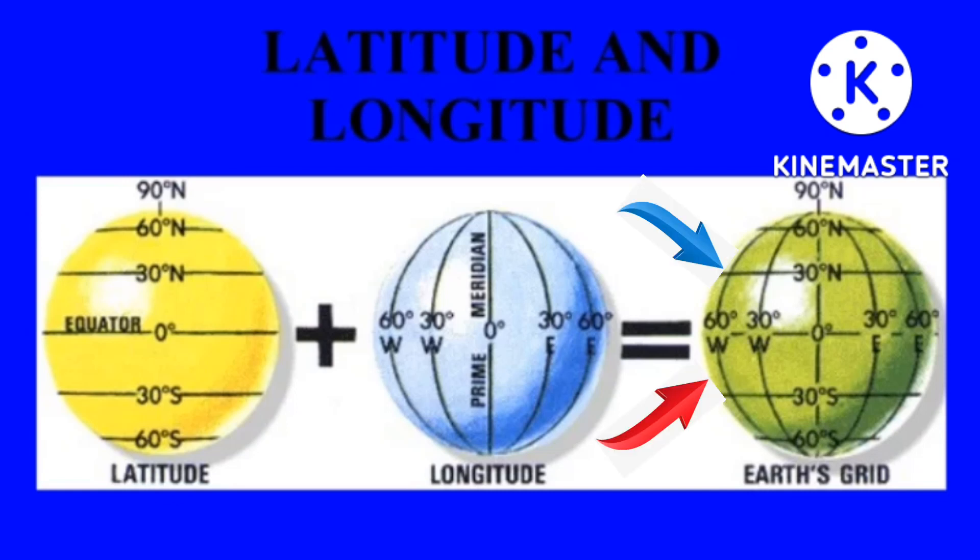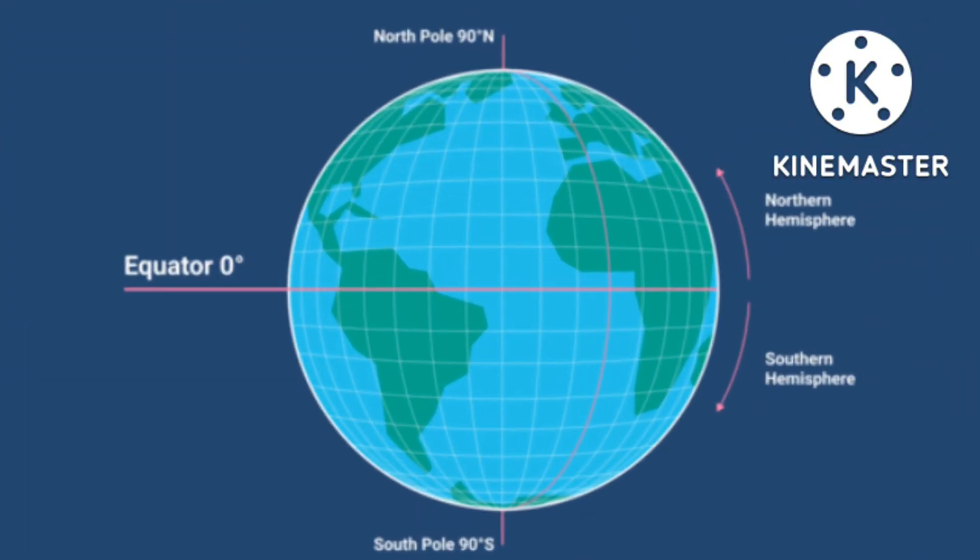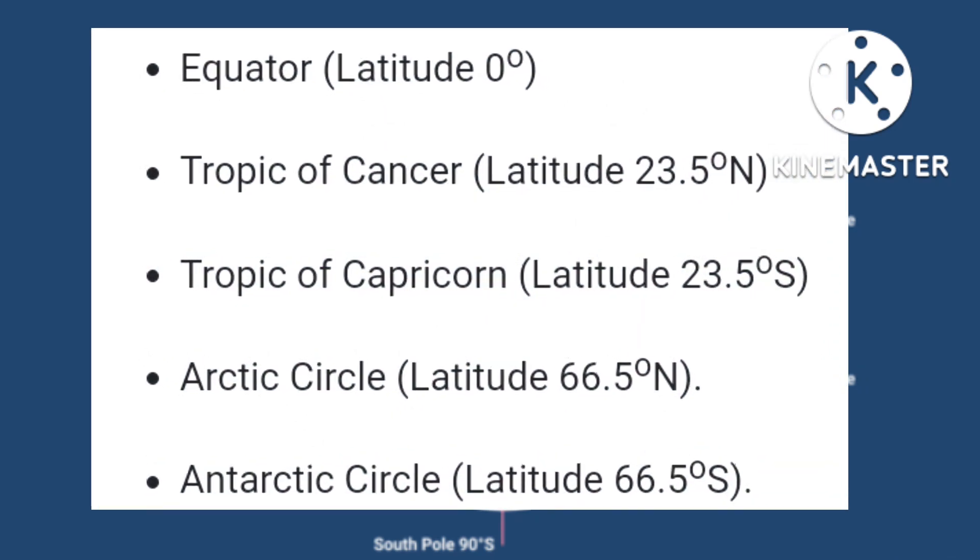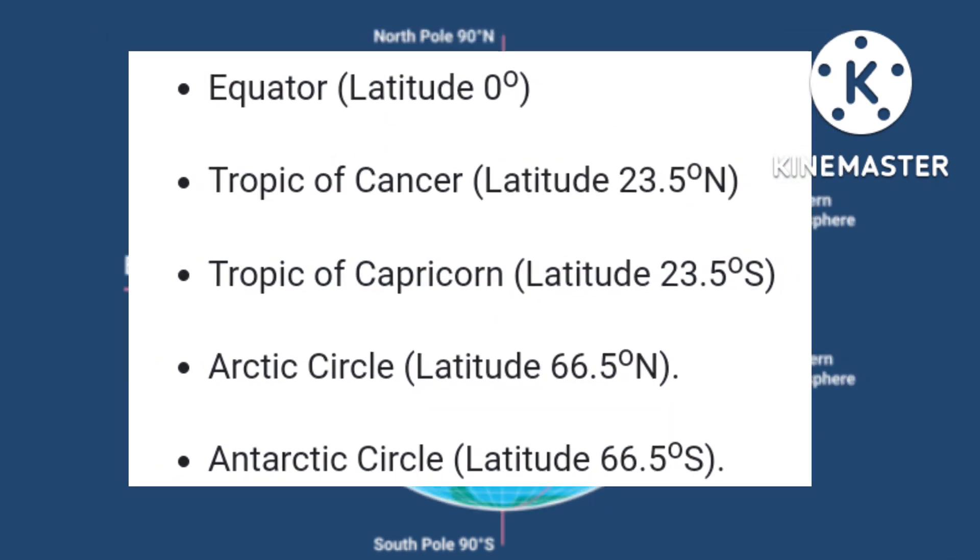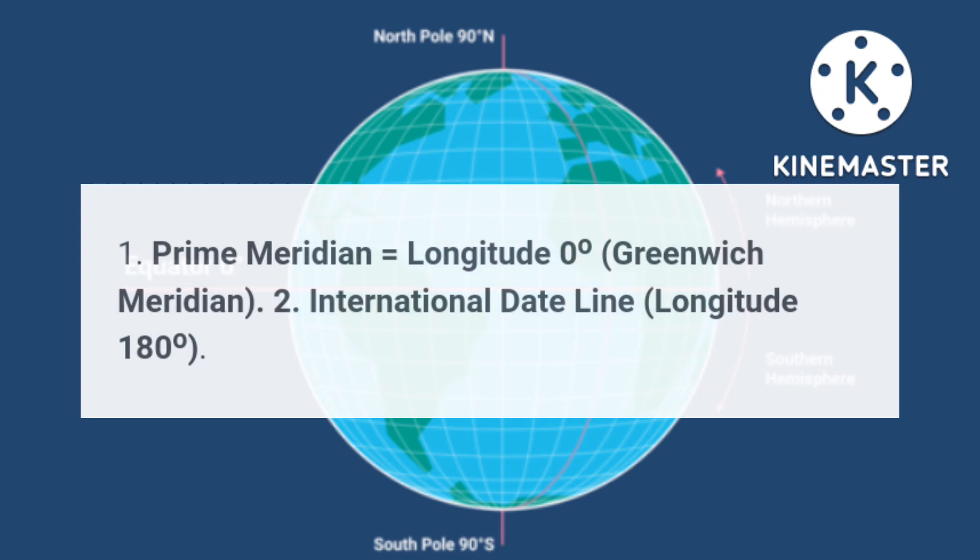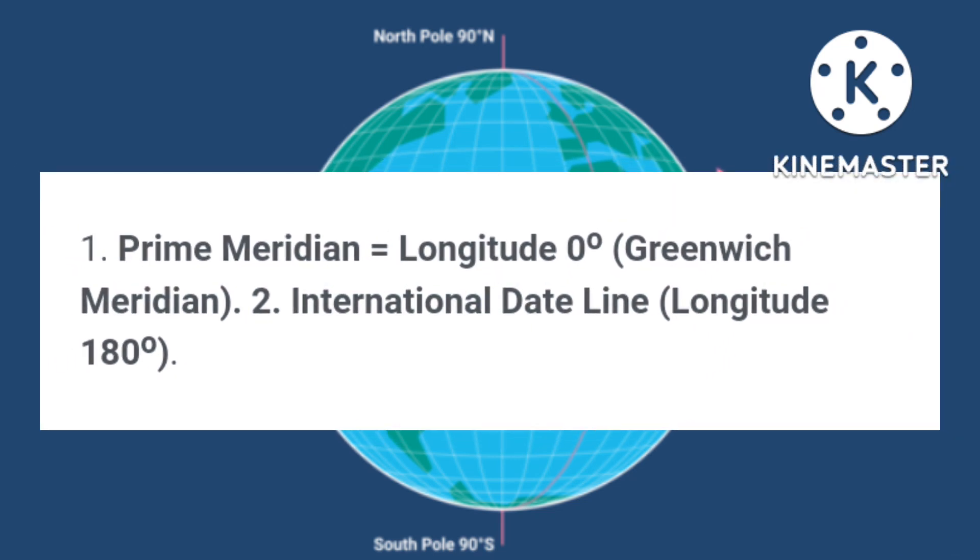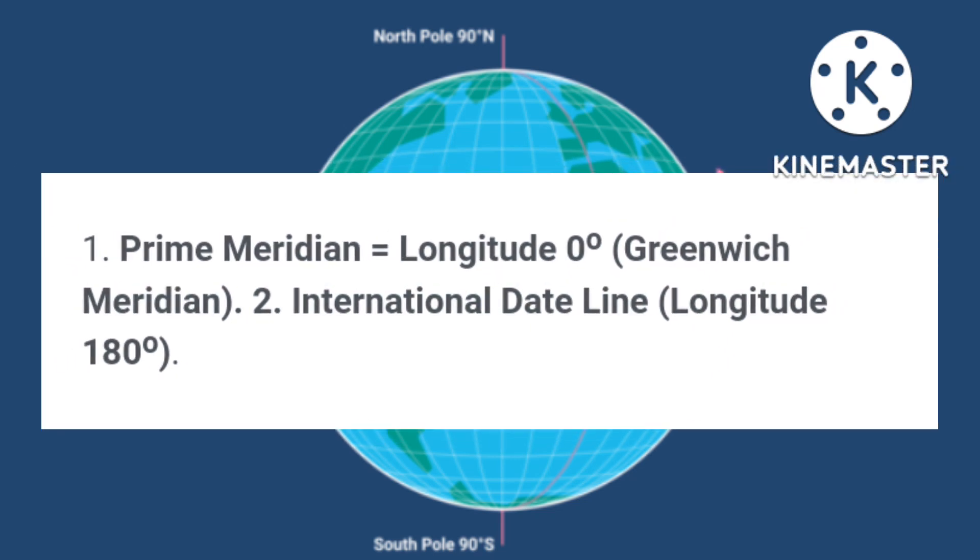The most important latitudes are equator, tropic of cancer, tropic of capricorn, arctic circle and antarctic circle. The most important longitudes are prime meridian and international date line.